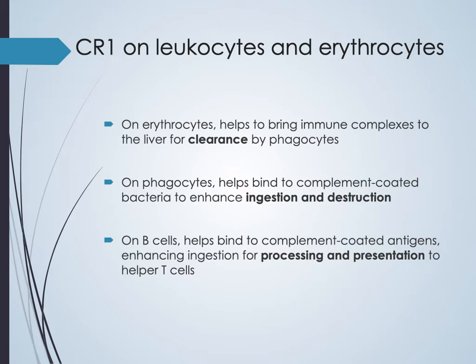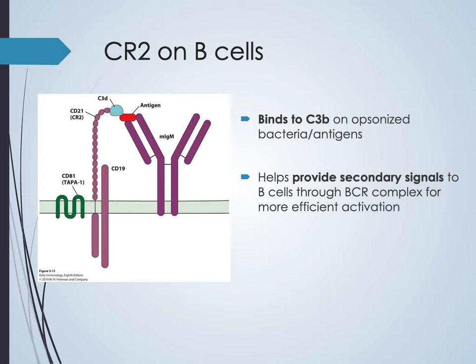Complement receptor 2 (CR2) on B cells binds C3B, leading to opsonization of bacteria or antigens. CR2 stabilizes interactions between the B cell receptor, the antigen, and CD19, providing a strong secondary activation signal. This will be revisited when B cell receptor complex activation is covered later in the course.